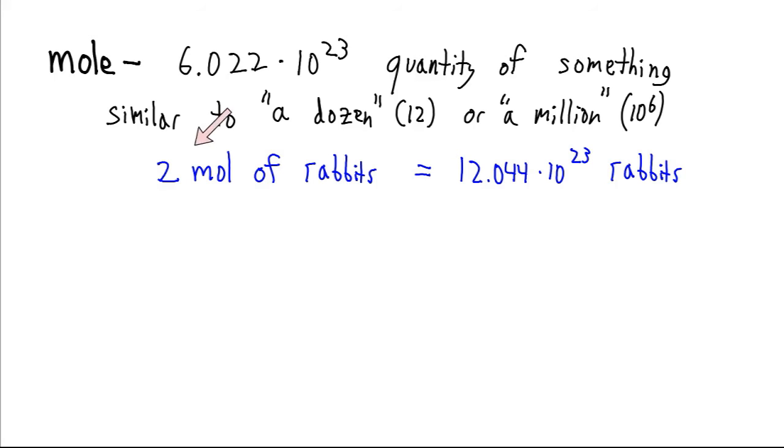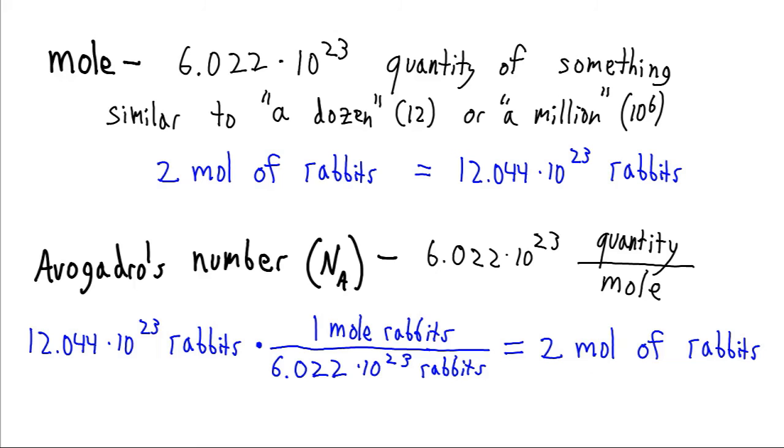So for instance, if we had two moles of rabbits. So each mole is 6.022 times 10 to the 23. So that means our rabbits here, we have a quantity of 12.044 times 10 to the 23 rabbits, just twice this number. So very philoprogenitive rabbits. Now, there's a number that goes along with this called Avogadro's number. And it looks very similar.